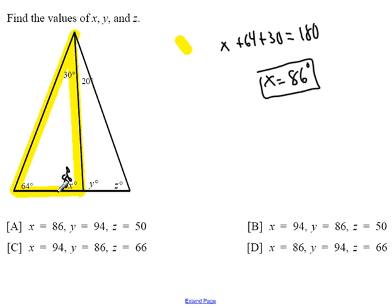Well, they are supplementary, which means they're going to add up to 180 degrees. So Y has to be a number such that when added to 86, I get a total of 180 degrees.